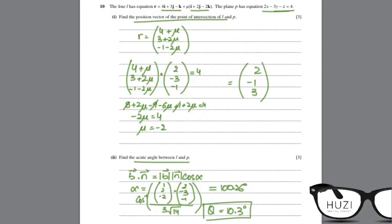If your alpha is obtuse, you subtract 90 from it. If your alpha is acute, you subtract it from 90 to get your acute angle. If your alpha is acute, 90 minus alpha. If your alpha is obtuse, alpha minus 90 to get your theta.